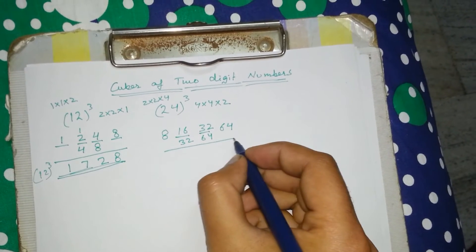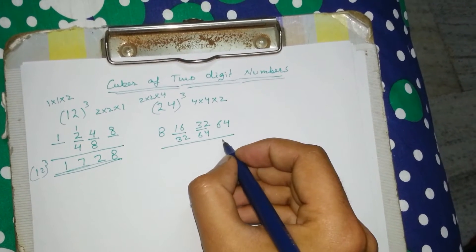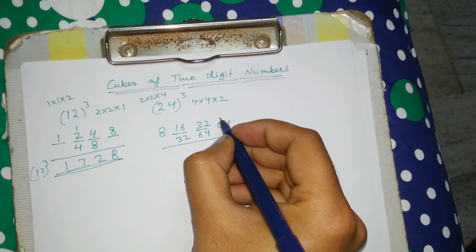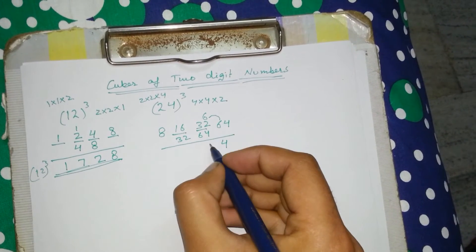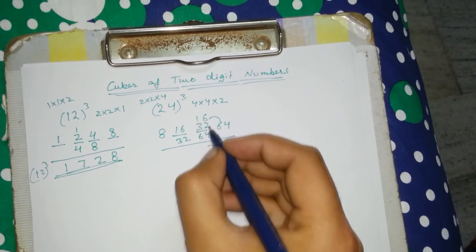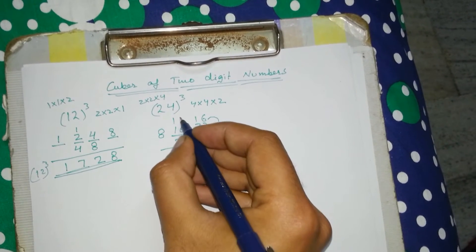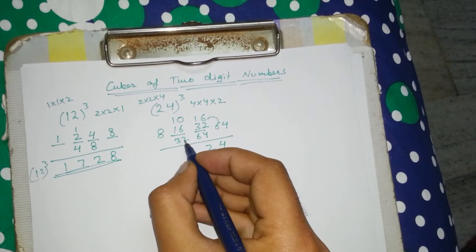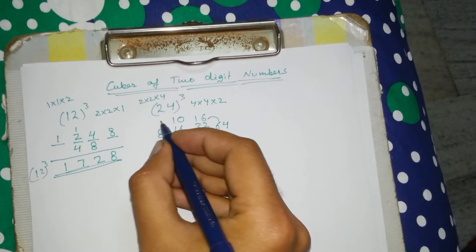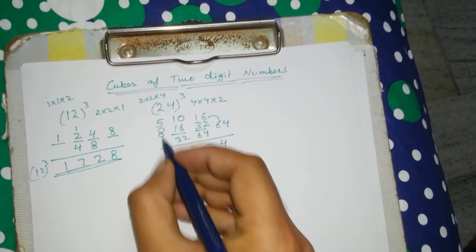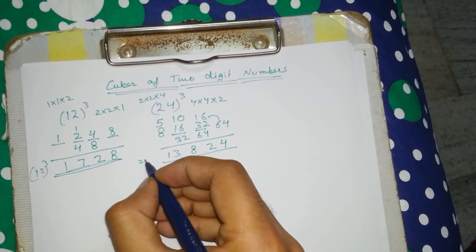Add these digits and you will find the cube of 24. Write 4 from 64 and carry 6. Then 4 plus 6 is 10, plus 2 is 12; write 2, carry 1. Then 6 plus 3 is 9, plus 1 is 10; write 10. Then 6 plus 2 is 8. Finally, 5 plus 8 is 13. The cube of 24 is 13824.